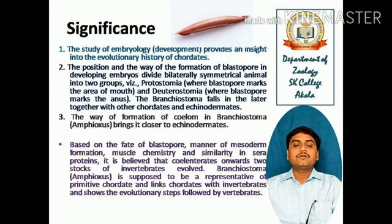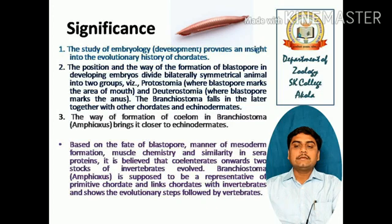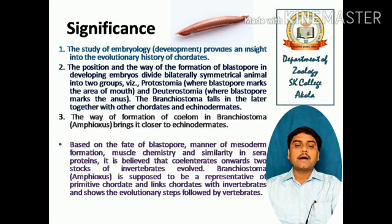The study of the development of Branchiostoma is significant from the following points of view. First, the study of embryology provides an insight into the evolutionary history of chordates. The position and manner of formation of the blastopore in developing embryos divides bilaterally symmetrical animals into two groups: Protostomia, where the blastopore marks the area of the mouth, and Deuterostomia, where the blastopore marks the anus. Branchiostoma falls in the latter, together with other chordates and echinodermates.